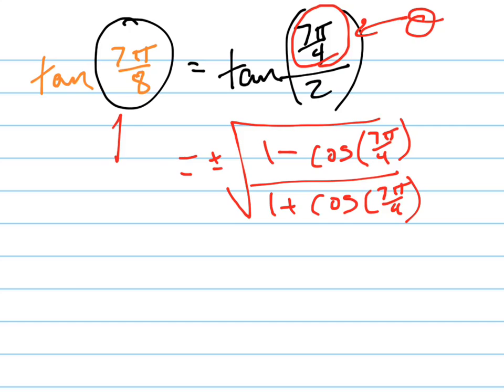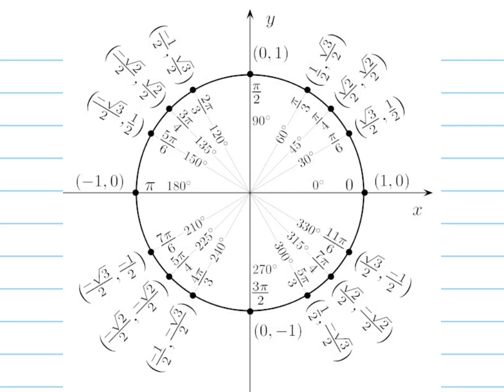We can figure that out right here. Where is 7π/4? What quadrant is it in? Let's look at our unit circle. 7π/4... I'm sorry, 7π/8, not 7π/4. Where's 7π/8?